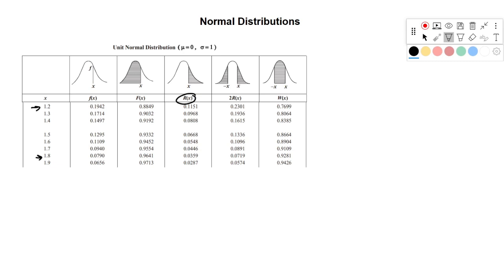So our 1.2 value is 0.1151, just reading directly from the table. And our 1.8 value is going to be 0.0359.